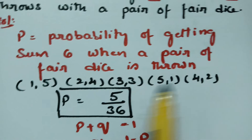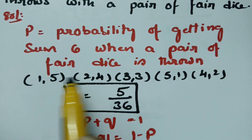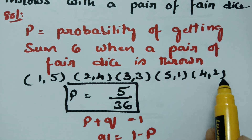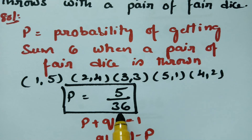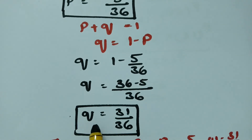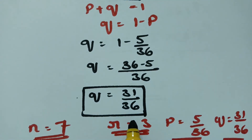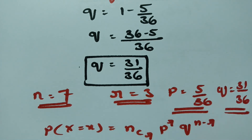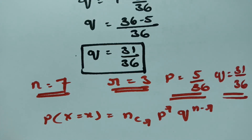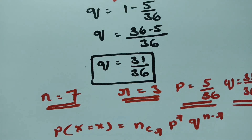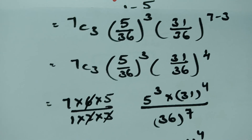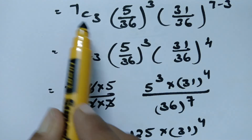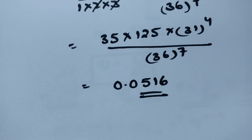To recap: the chances of getting sum 6 with a pair of fair dice are (1,5), (2,4), (3,3), (5,1), and (4,2) — giving P = 5/36 and Q = 31/36. With N = 7 and R = 3, using the formula NCR × P^R × Q^(N−R), we get the final probability of 0.0516.